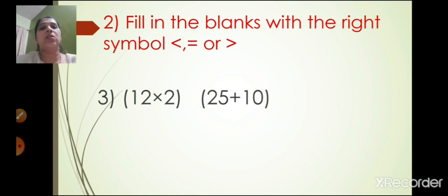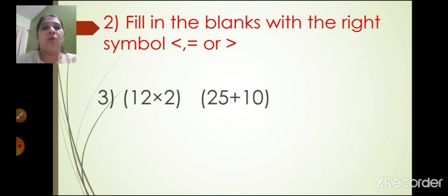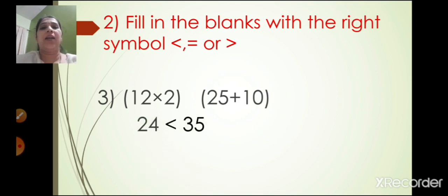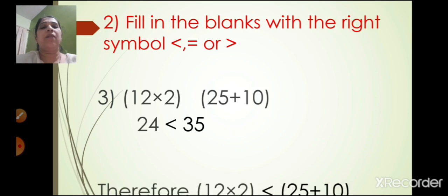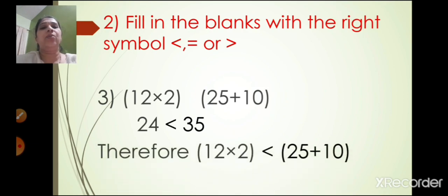The third one: 12 into 2 and 25 plus 10. Now 12 twos are 24, and 25 plus 10 is 35. So 24 is smaller than 35. Therefore 12 into 2 is smaller than 25 plus 10.